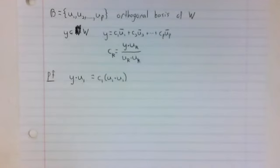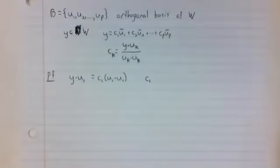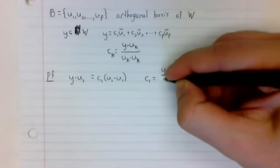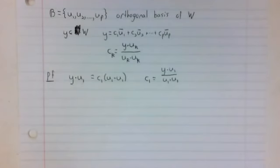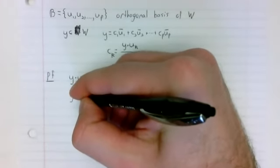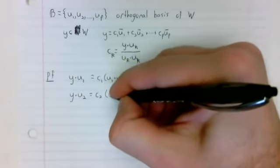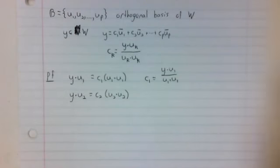And well, that's pretty much it. A real number equals c sub 1 times another real number. We can solve for c sub 1 and then the same argument works for any c sub k. So it works for c sub 2, for c sub 3, and so on up to c sub p.